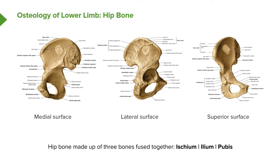The hip bone is actually formed by three bones fused together, primarily at the acetabulum. We can see a medial surface view, a lateral surface view, and a superior surface view. We can make out the ischium, the ilium, and the pubis in all of these views.